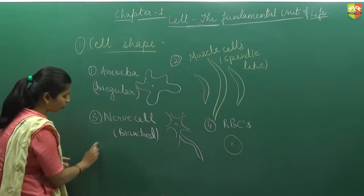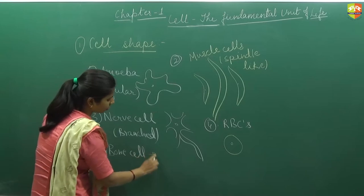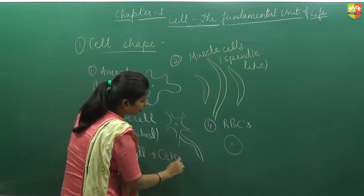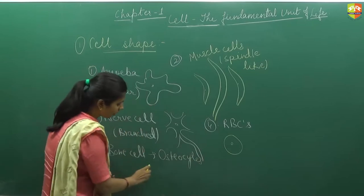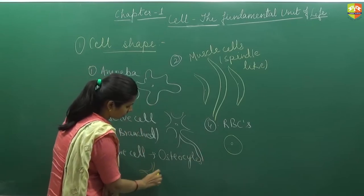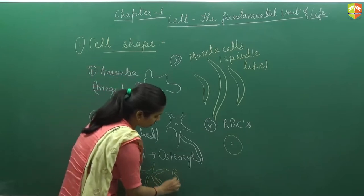And the fifth is bone cell. The name of the bone cell is osteocyte. It is somewhat star shaped in the structure and their site is known as of branch shape.